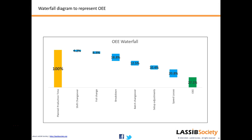The final outcome was that OEE of the line improved from 18% to 38%, meaning on that particular product line revenue increased by 0.3 million dollars every year. This was just one line — if your organization has many production lines, you can imagine what savings OEE improvements can deliver. With this we come to the end of the presentation. For any further questions, please contact LassibSociety.org. Thank you and have a nice day.